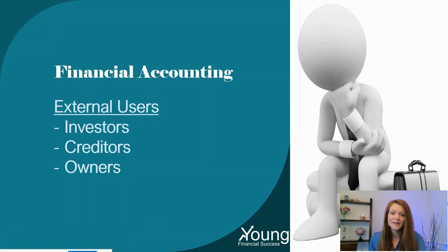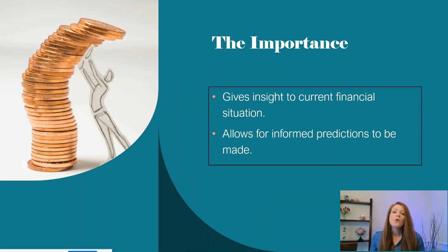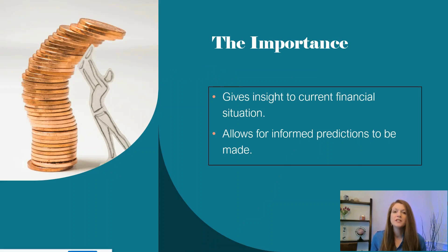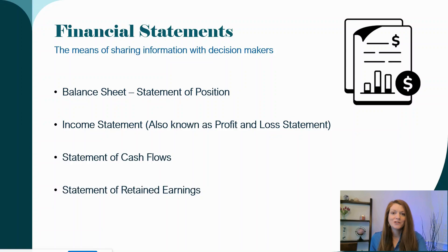Managerial accounting, which leads into cost accounting, is where we focus on internal users — we focus on management. But with financial accounting, which is what we're doing in intermediate, we are focused on the external users. The importance of these financial statements for external users is to give information that readers would need to understand what's going on with the company. They want to see what has happened in the past and be able to make wise predictions about the future. If you were going to put your money into a company or lend a company money, you would definitely want to see their financial statements.